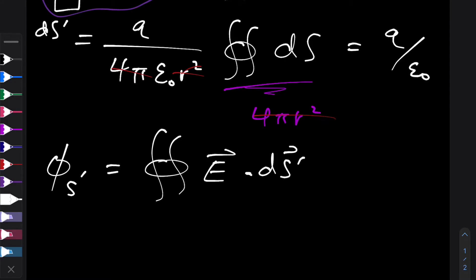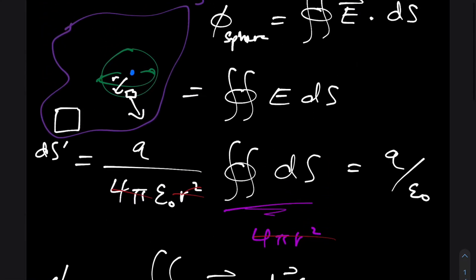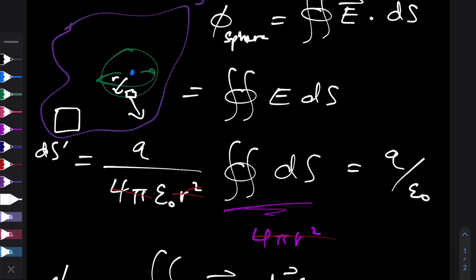So now we can't change this vector product, this scalar product into a regular multiplication, because E and ds dash don't necessarily have to point in the same direction anymore. But what we can do